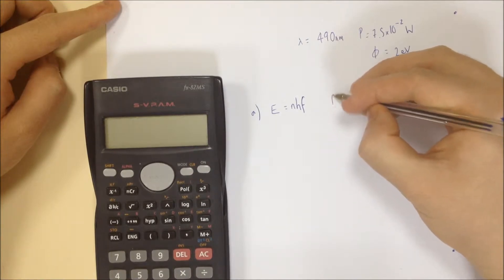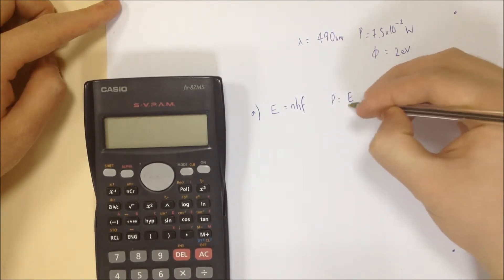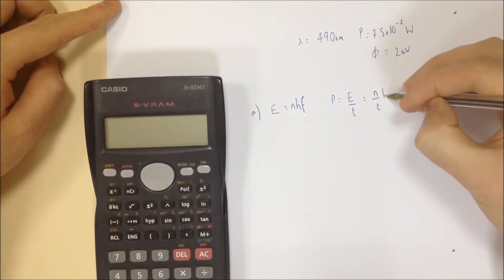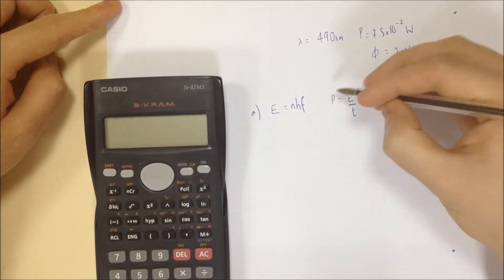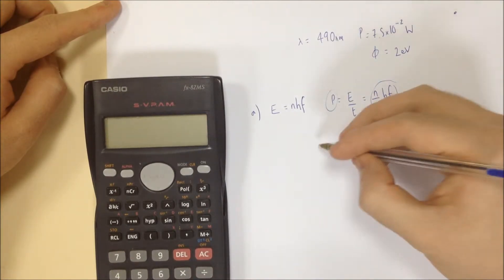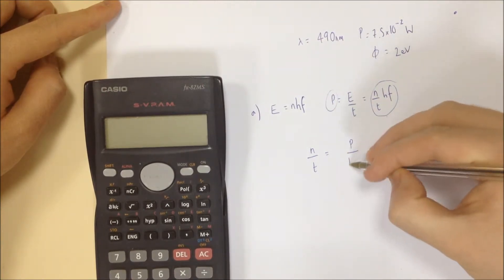So you've got the number of photons, and that gives you the total energy. Therefore power, power is energy divided by time. So energy divided by time is the same as n over t HF. And so by taking this bit and this bit, we can rearrange the equation now to get an expression for n over t,